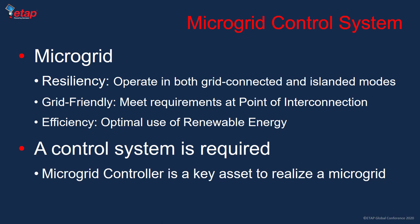Another aspect of the microgrid is efficiency. A microgrid control system allows optimal utilization of renewable energy resources. By having energy storage, you can do peak shaving and price arbitrage, making the microgrid more efficient and improving the usage of renewables. In order to achieve these three attributes — resiliency, grid-friendly operation, and efficiency — a control system is required.